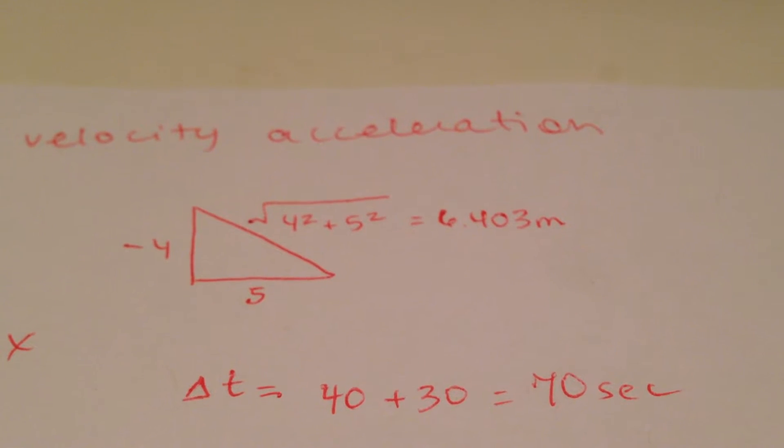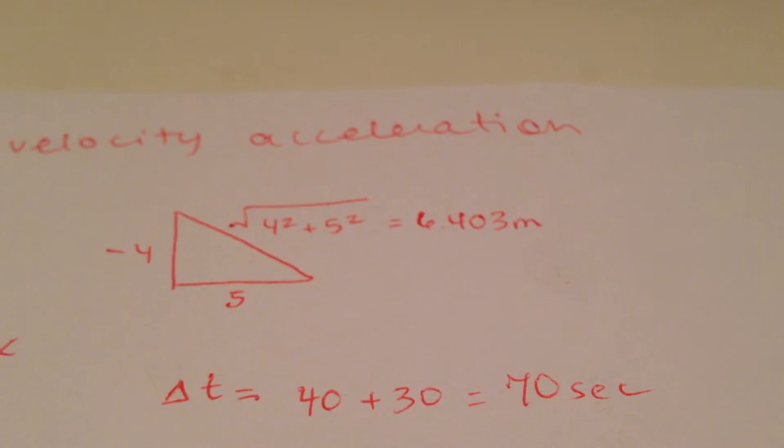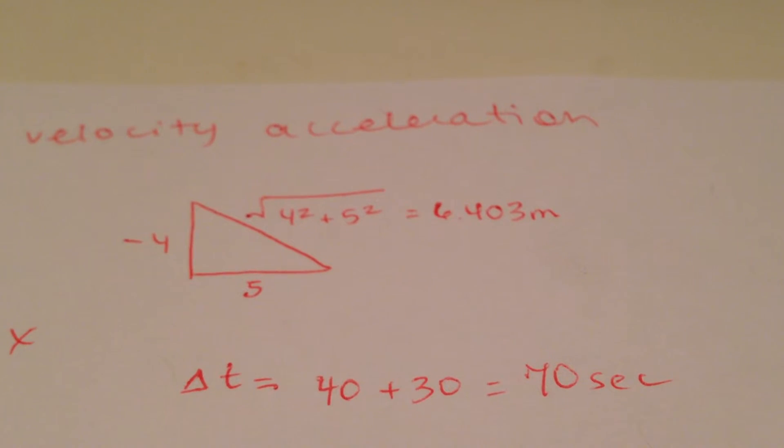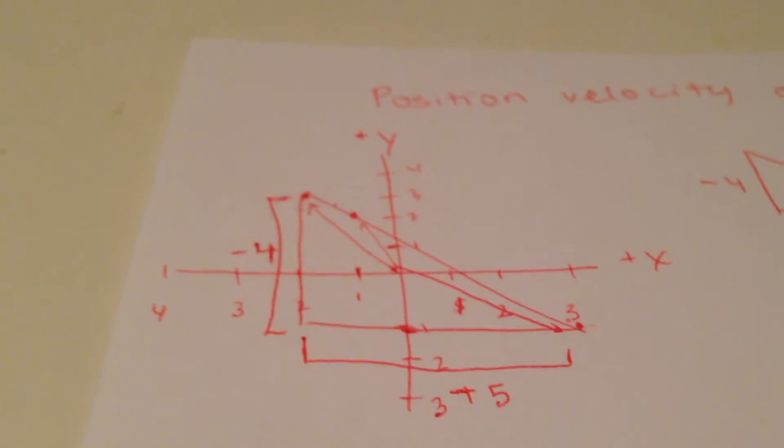We have negative 4 squared plus 5 squared equals 6.403. So that is our displacement for that chart.